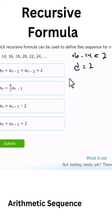The recursive formula for this sequence will be a sub n equals a sub n minus 1 plus the common difference. For this particular case, it will be a sub n equals a sub n minus 1 plus 2.